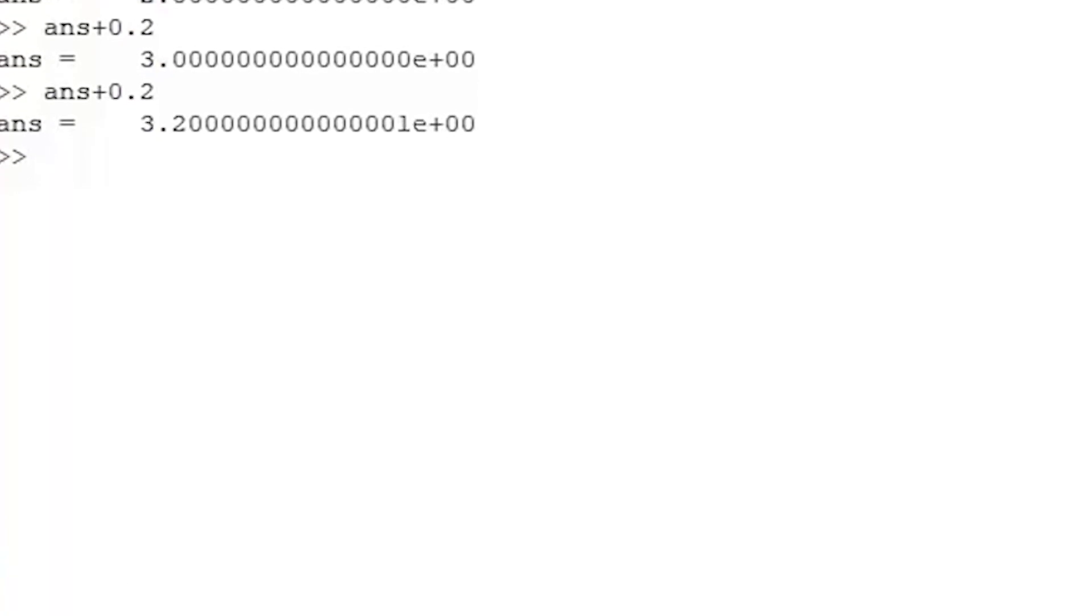The Roundoff Error is dependent upon the particular numbers being used. If I add 2.6 plus 0.6, I get 3.2. Adding 0.6 to that result gives 3.8. Repeating this process gives 4.4.